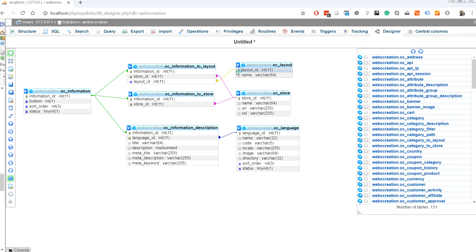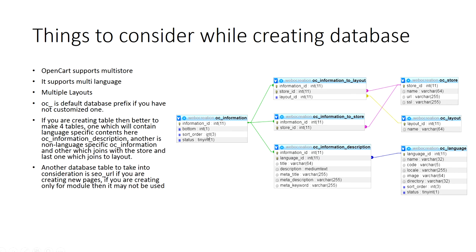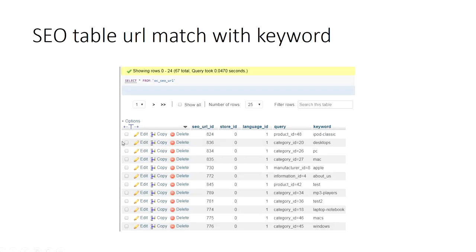Another database table to take into consideration is the SEO URL table. If you are creating new pages, you have to insert data into the SEO URL table as well. For example, if product_id equals 48, then the keyword will be ipod_classic and the SEO URL will be the URL slash ipod_classic. So this is how the SEO URL table works and we have to take it into consideration.